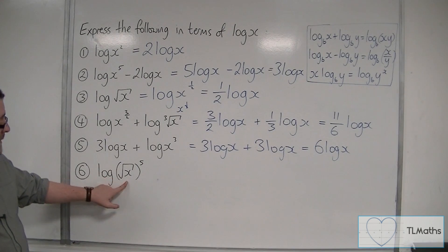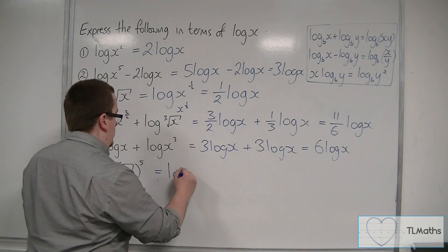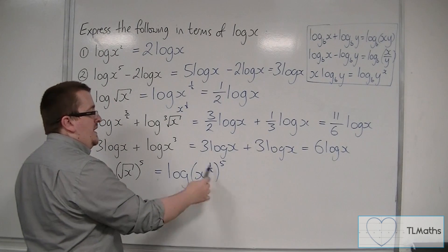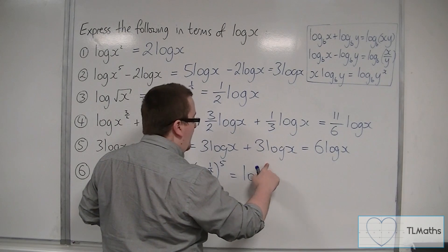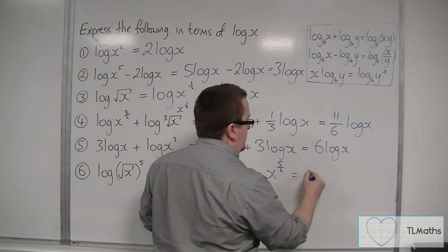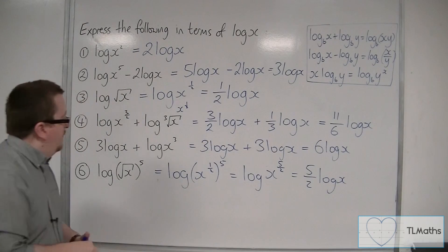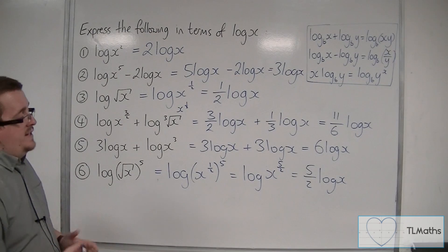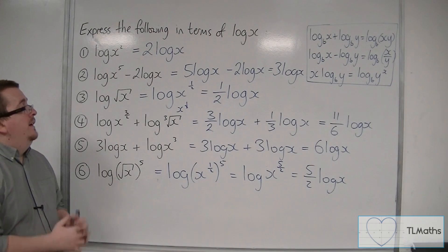Number six, remember that root x can be written as x to the half. And then I can deal with the indices here. So that's log of x to the five halves. And then the five halves can come down to the front. You could equally have brought the five down first and then dealt with x to the half and brought the half down. It doesn't matter in which order you work. You'd still get to five halves log x.